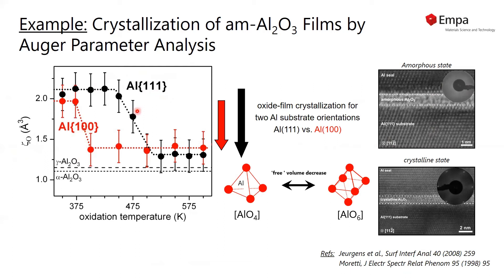We can see that with such a concept, we were able to show that the amorphous film transforms into a crystalline film at much lower temperatures on the (100), and thus the amorphous oxide is intrinsically much more stable on the more densely packed (111) surface.